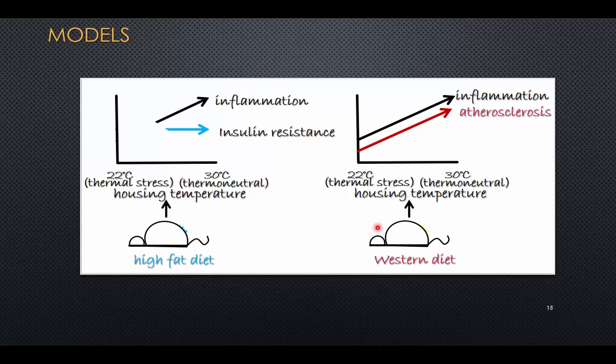Another important thing is the use of models. Like the old saying that a picture is worth a thousand words, a good model can help you understand what the authors were trying to convey. Here we have simple models tracking inflammation and insulin resistance versus thermal stress — values when animals are colder than their resting metabolic temperature versus at resting metabolic temperature — and the influence of a high-fat diet as well.